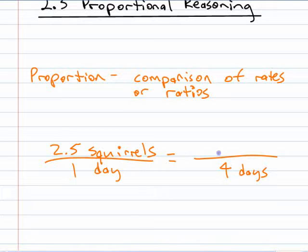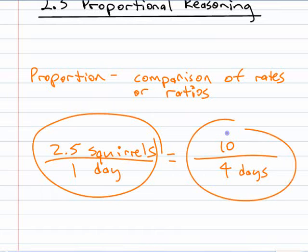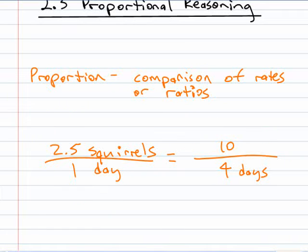At some point maybe half a squirrel will walk by. What might be up here? 10, yeah. If these are going to be the same rate, equivalent rates, then that has to be a 10, right?